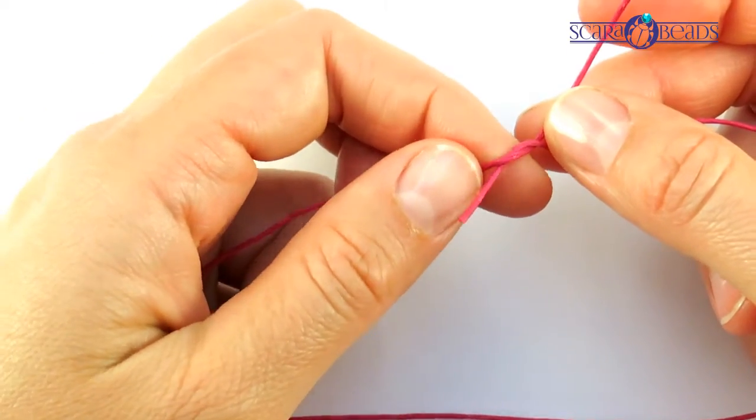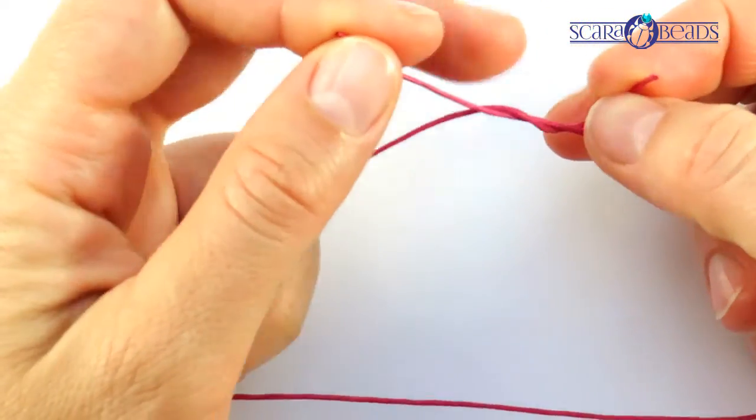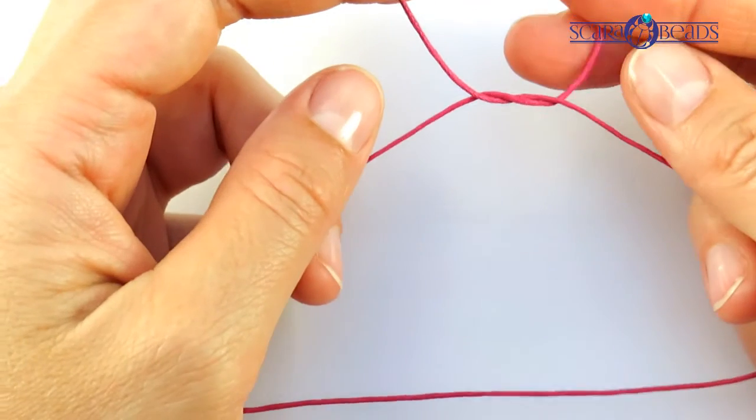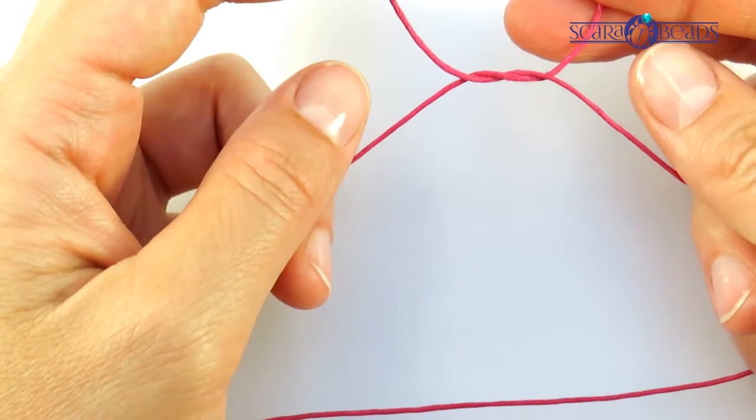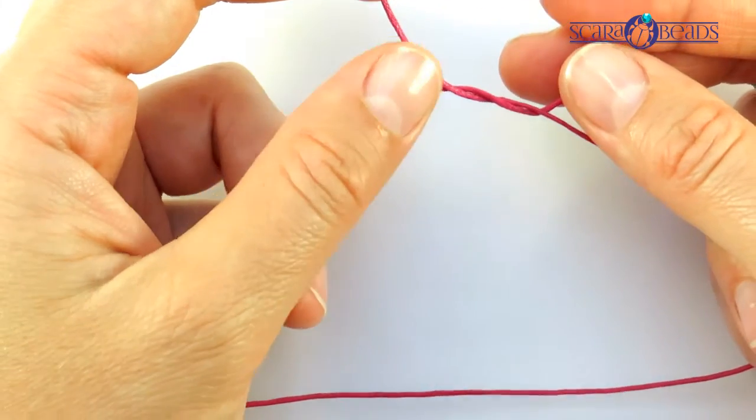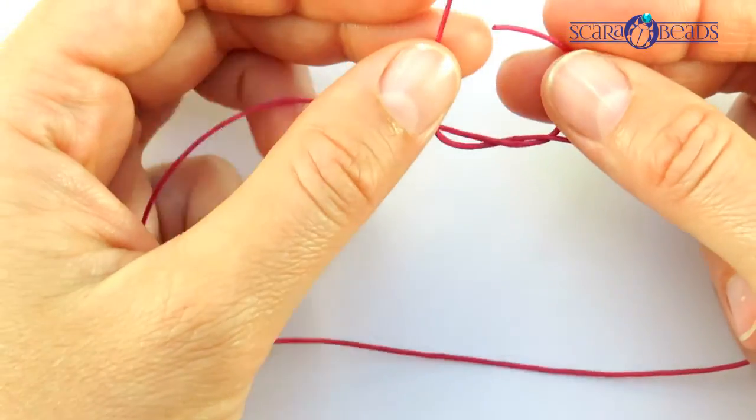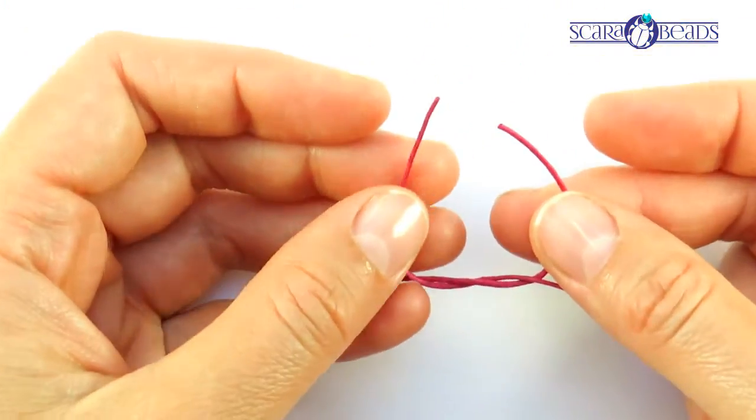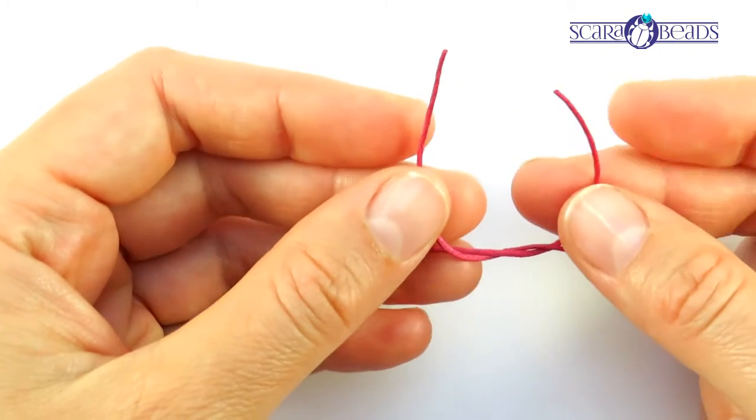Pull them criss-cross and wrap one end around another. Please pay attention that the left end is now going out from the below and right end from the back. It means that we are ready to do the second part of the knot.